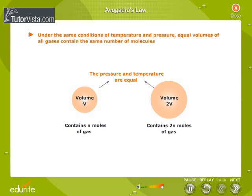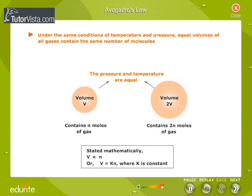We observe that a volume of 2V, or twice the former volume, contains 2n moles of the gas. This can be mathematically stated as V is proportional to n, or V equals kn, where k is constant. Now, click on the next button.